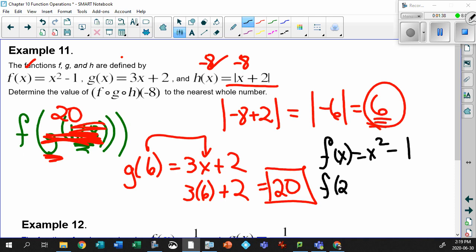So f at 20 means 20 squared minus 1. Well, 20 squared is 400, subtract 1 to get 399.